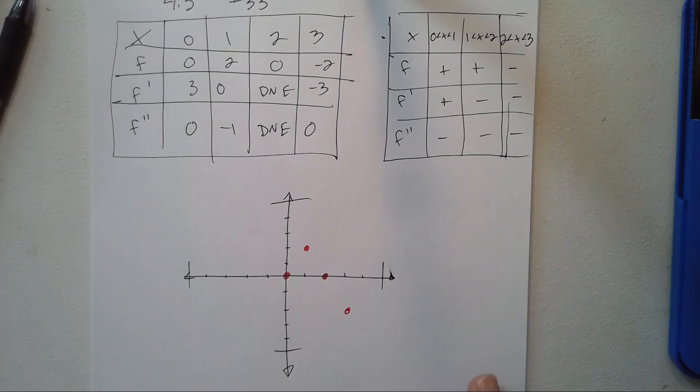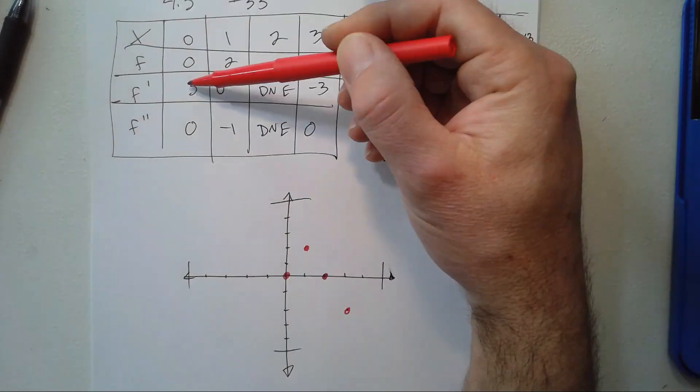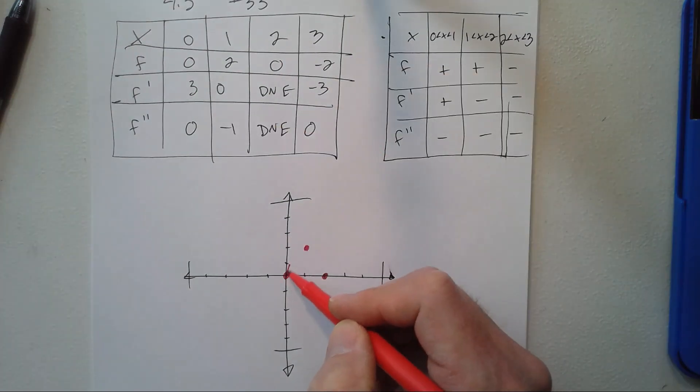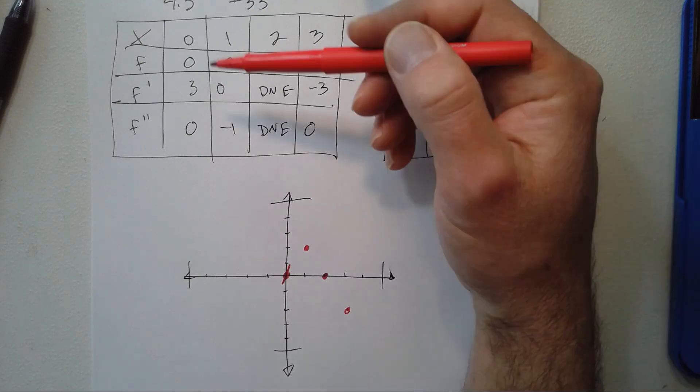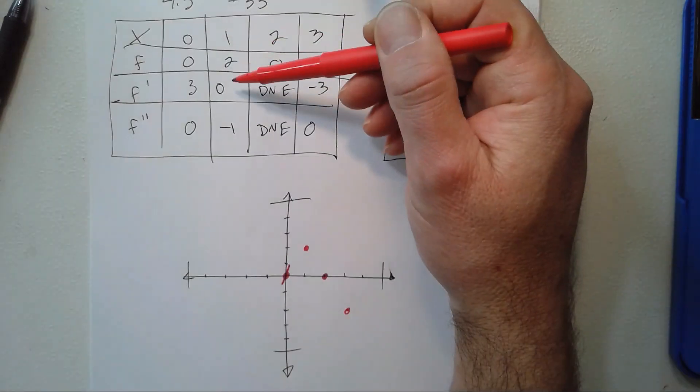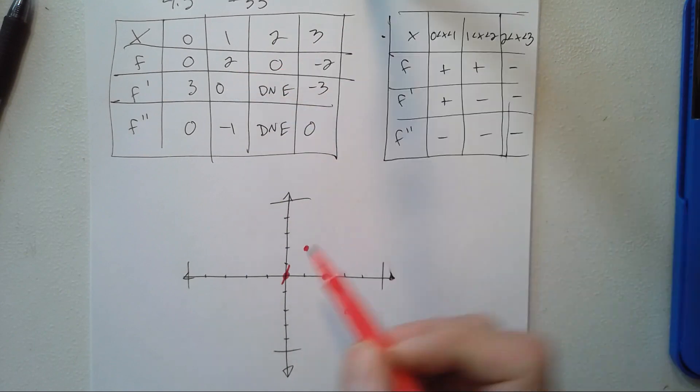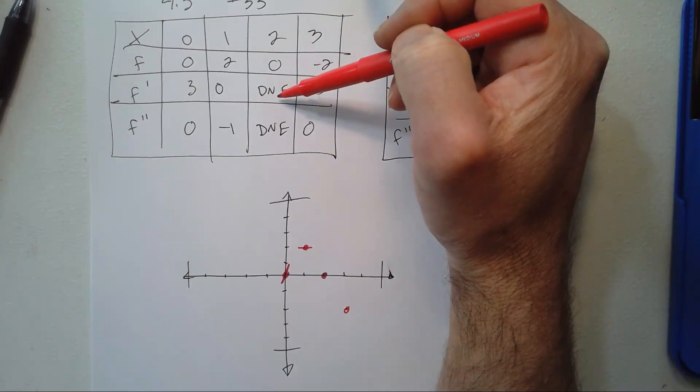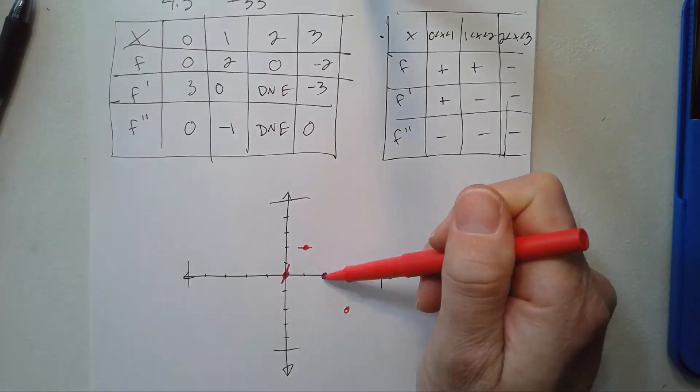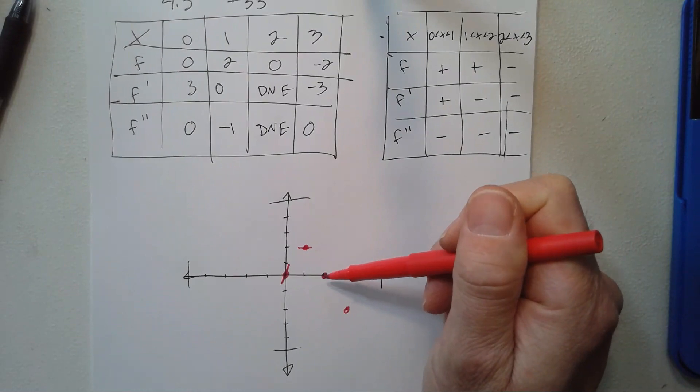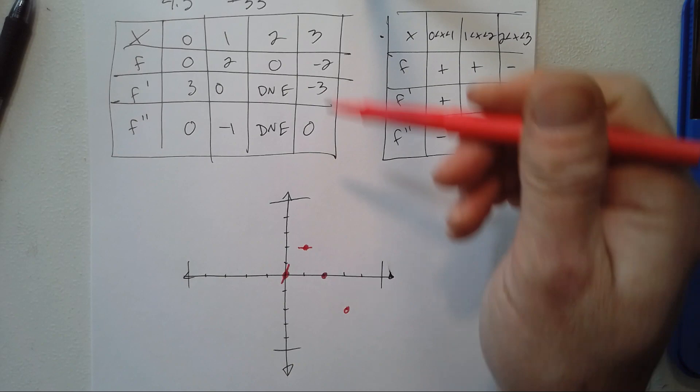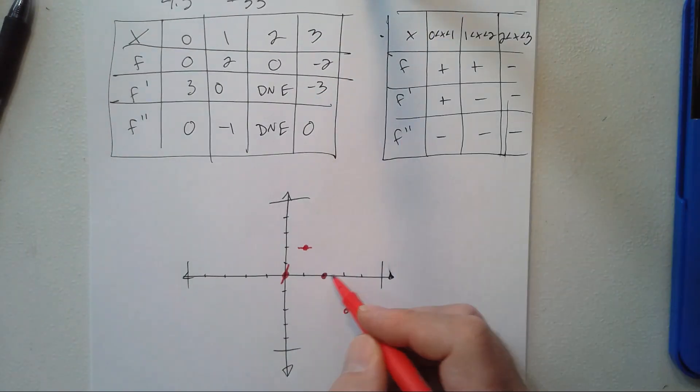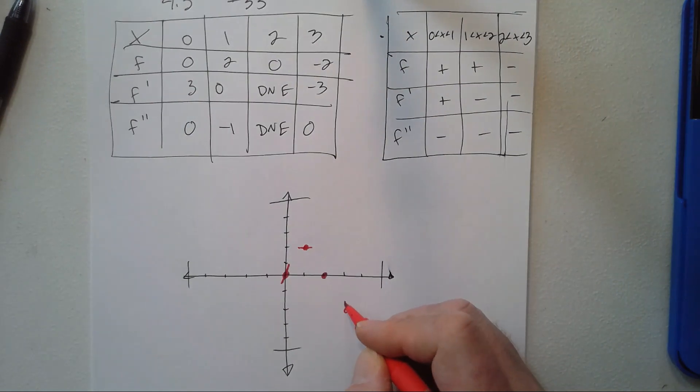Now when x is 0, the derivative is 3, so we have a slope of 3 right here. When x is 1, the slope is 0, so it's going to be flat at that point. When x is 2, the derivative doesn't exist, so maybe a cusp or corner—something happens where the derivative doesn't exist there. When x is 3, the derivative is negative 3, so it's going to have a slope of negative 3 at that point.